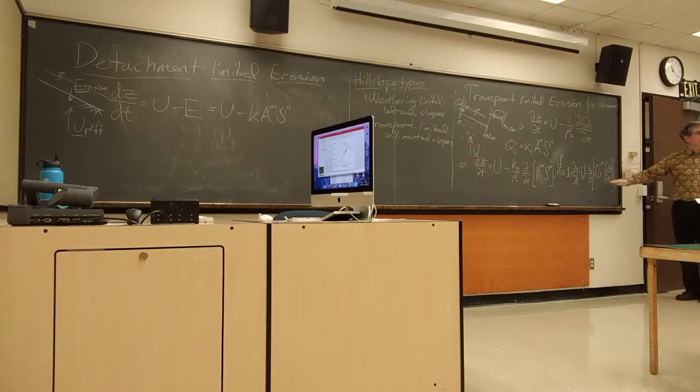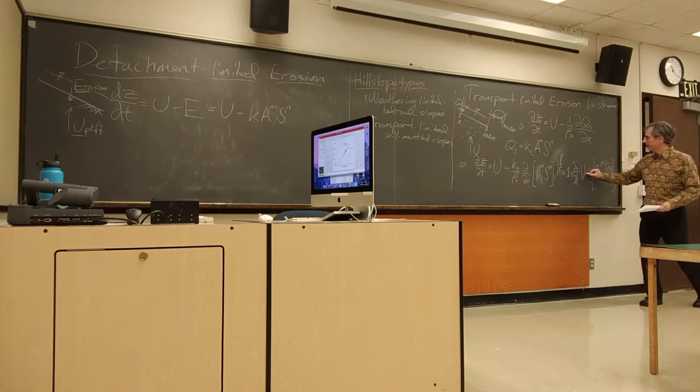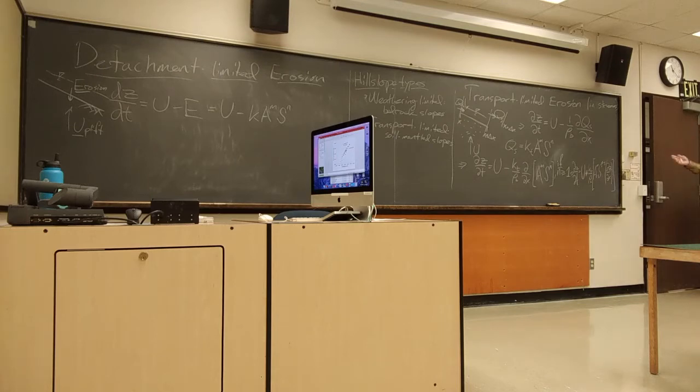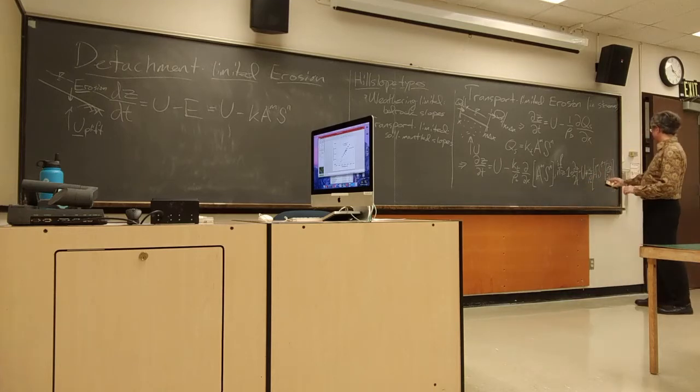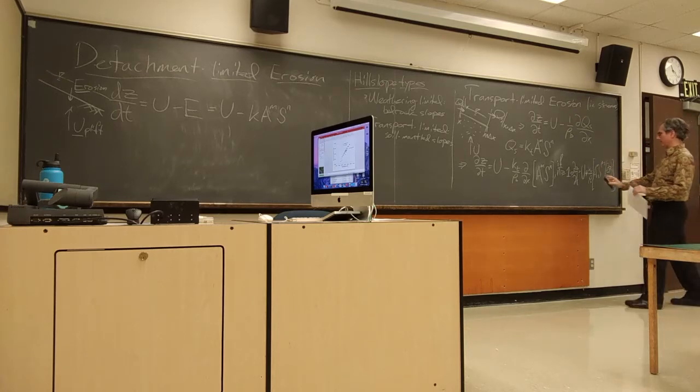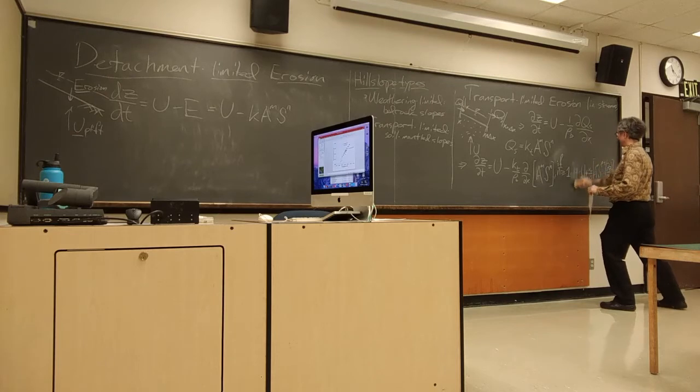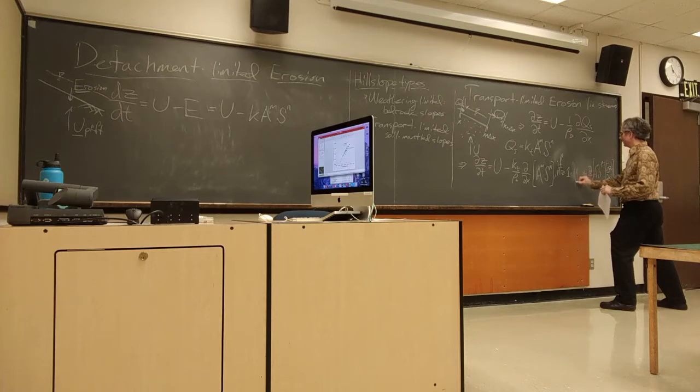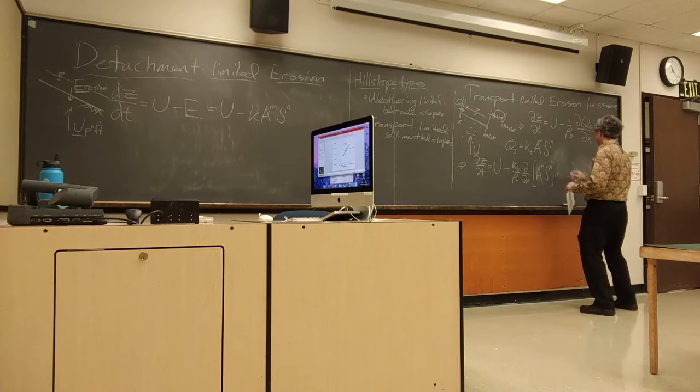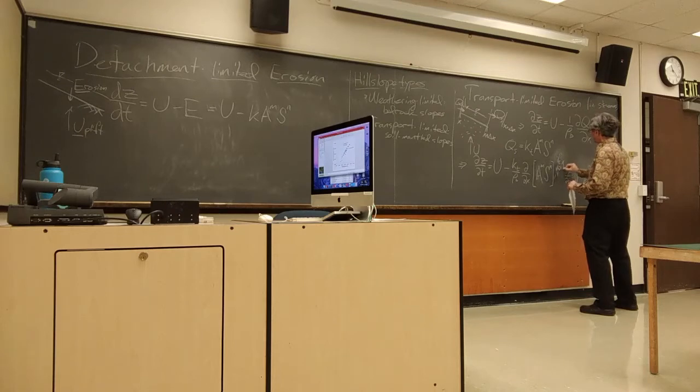When I do that, remember, slope is defined as minus DZ DX, so I get to make a minus sign positive right there. Now, the point of doing that, and I hope it was worth writing that up, is to simply be able to say, now, oh, I forgot to put in my exuberance to try to save space. Because, that's screwed up. Because, I need D by DX here.